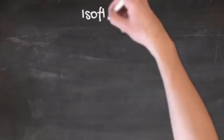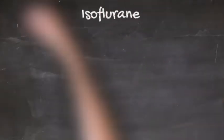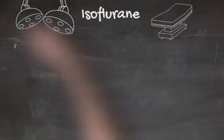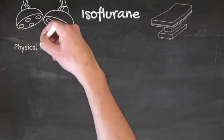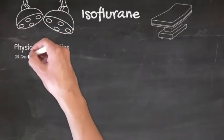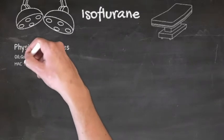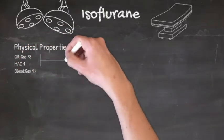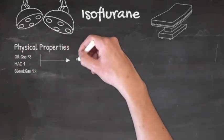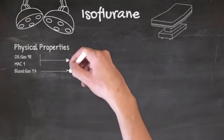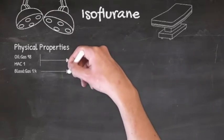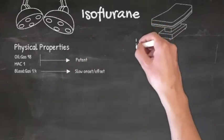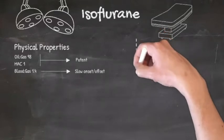We'll start off with isoflurane. Isoflurane has an oil-gas partition coefficient of 98, meaning it's very potent and so has a MAC of only 1. However, it has a comparatively high blood-gas partition coefficient of 1.4, and so has a relatively slow onset and offset.